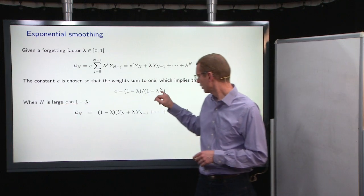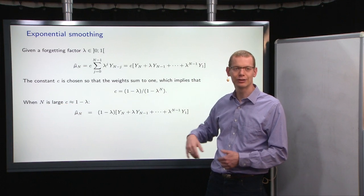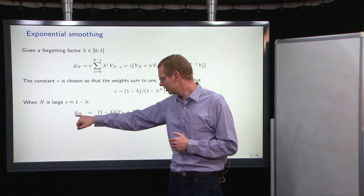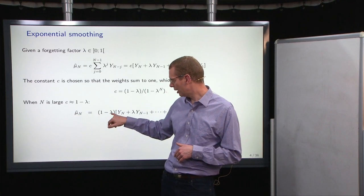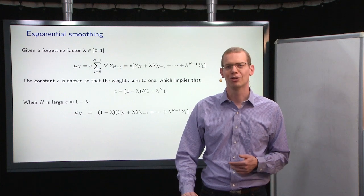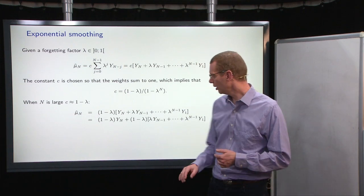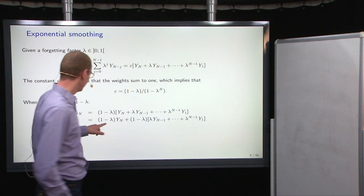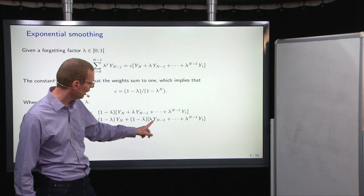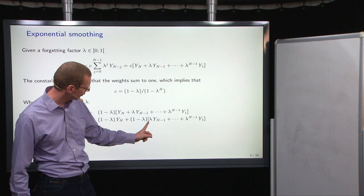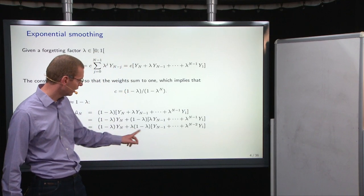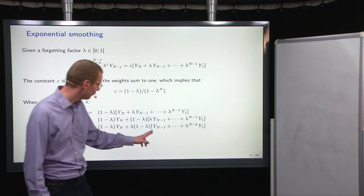Now, when n becomes large, and lambda is not too close to one, then lambda to the n power is effectively going very close to zero. That means that we can just say that we have our estimate at time n is one minus lambda times the weight of all the previous ones. So what is the difference between the two things? Well, if we start splitting this up and look at the weight on the most recent, and then we have that on all the previous ones. Now, if we look at everything that is in here, in the square parenthesis, if we take a lambda out, this is exactly our estimate from the time just before.